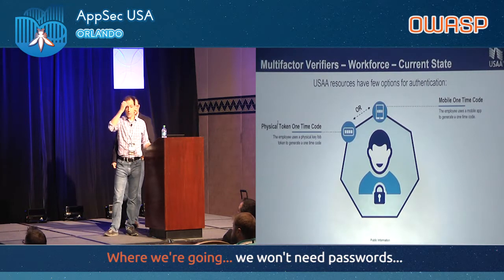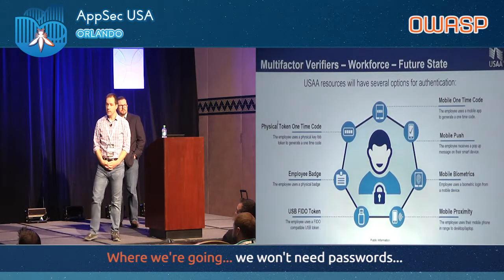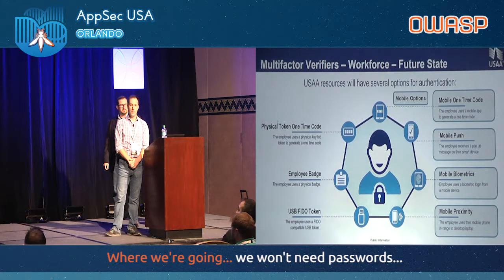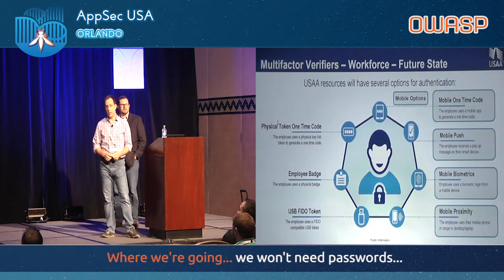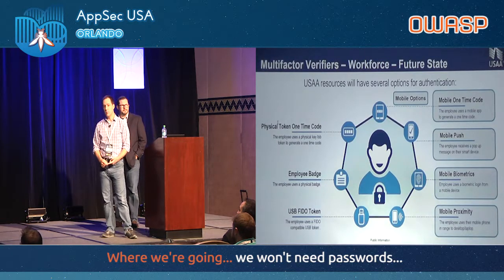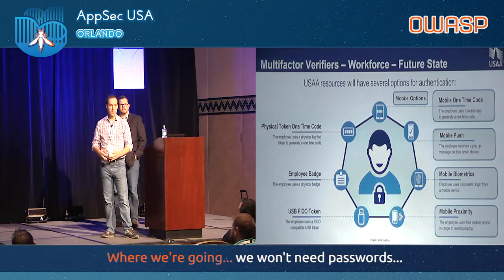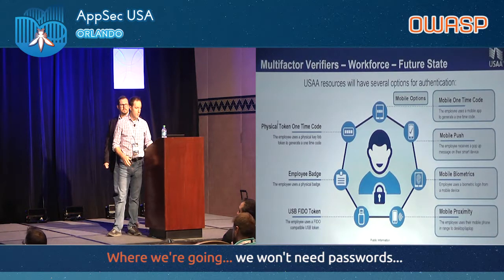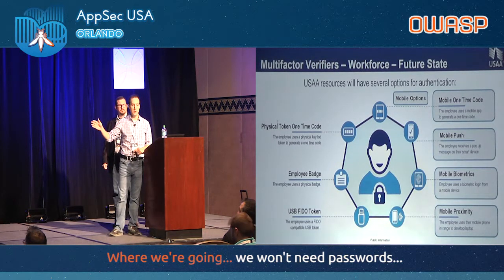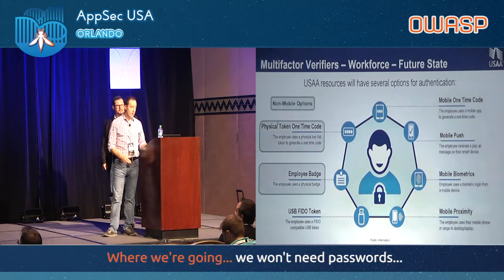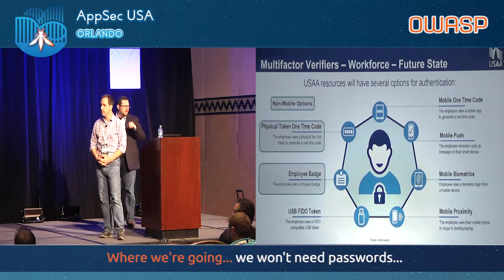So this is what it looks like right now — just a one-time access code. What we've added to the environment is working with several different vendors to collect a myriad of options for our employees. On the right-hand side, we've rolled out the same mobile options but added mobile push capabilities to push directly to the phone, the use of mobile biometrics, and most excitingly, mobile proximity capability — pairing the phone with the workstation so that as long as it's within range of the computer, similar to a keyless car scenario, we can use that as a factor for authentication.